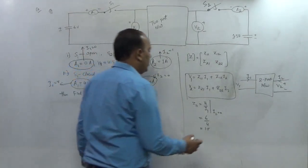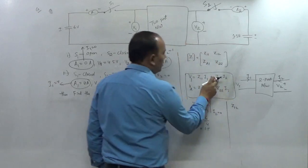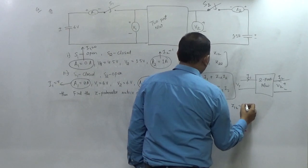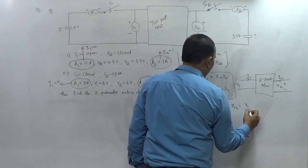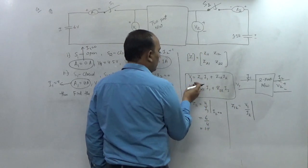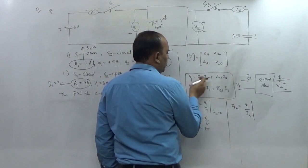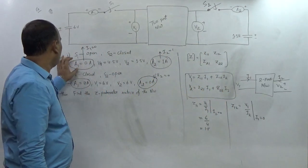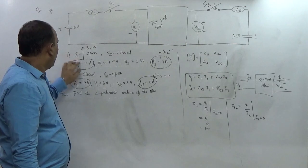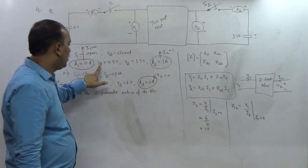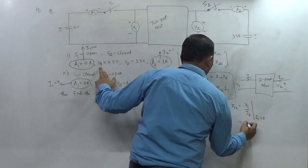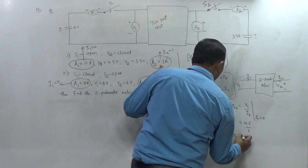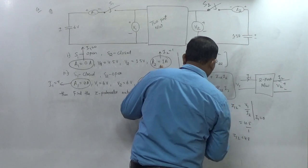For Z12: from the equation, Z12 = V1/I2 when I1 = 0. The condition I1 = 0 corresponds to S1 open. In that case, V1 = 4.5 V and I2 = 1 A. Therefore, Z12 = 4.5/1 = 4.5 Ω.